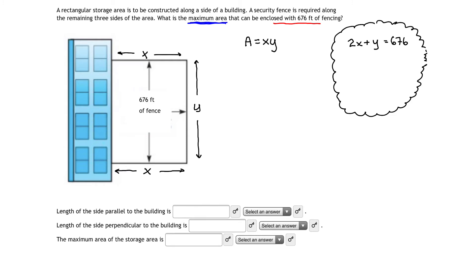I think I want to solve for y. If I solve this equation for y, that tells me that y equals negative 2x plus 676. But more importantly, that gives me a substitution variable for my area equation.